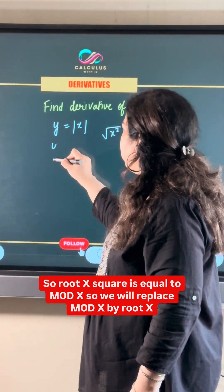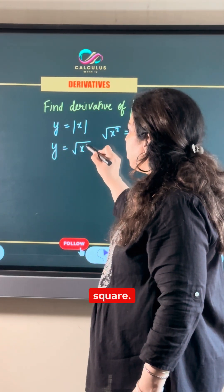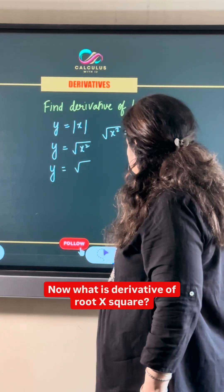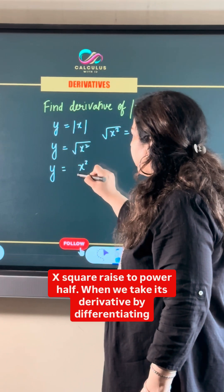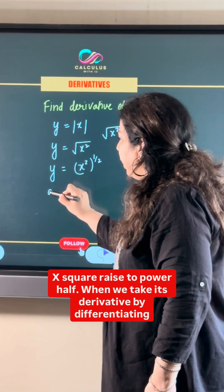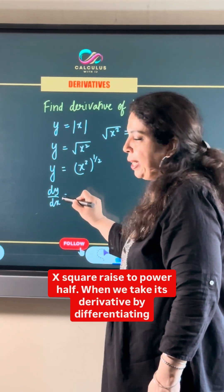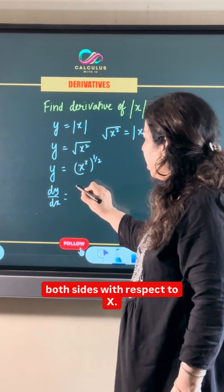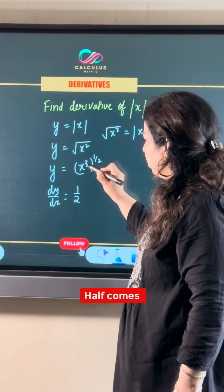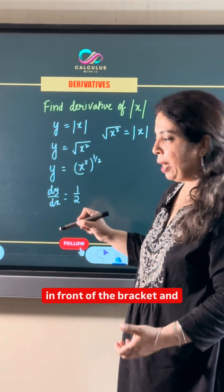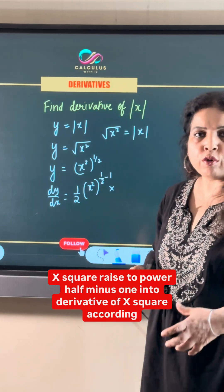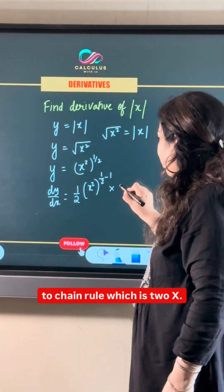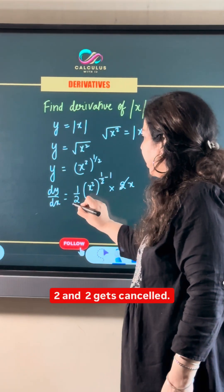So we will replace mod x by root x square. Now what is derivative of root x square? Root x square is basically x square raised to power half. When we take its derivative by differentiating both sides with respect to x, half comes in front of the bracket and x square raised to power half minus 1 into derivative of x square according to chain rule which is 2x. x and x gets cancelled.